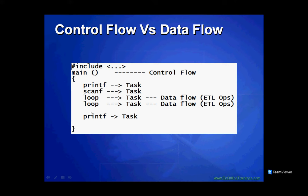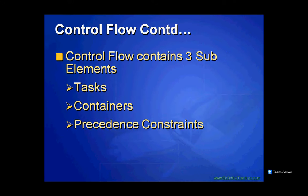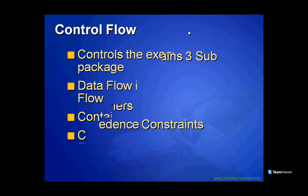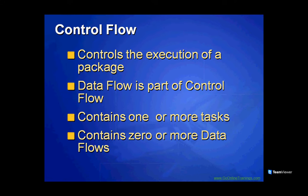So what does Control Flow contain? Tasks and containers. What does Data Flow contain? Sources, destinations, and transformations. Do not say 'Data Flow contains tasks' — that is wrong. Do not say 'Control Flow contains transformations' — that is also wrong. Control Flow contains tasks and containers. Data Flow itself is a task, invoked by Control Flow.